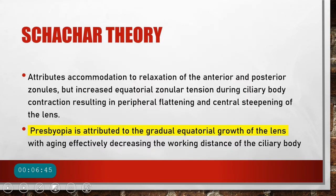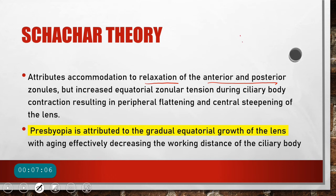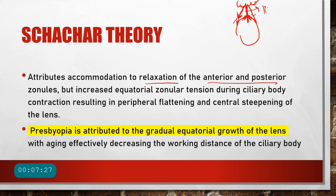The Shachar theory is totally different and opposite to the Helmholtz theory. It states that accommodation occurs due to relaxation of the anterior and posterior zonules and increased equatorial zonular tension during ciliary body contraction. In the Helmholtz theory all zonules relaxed; in Shachar's theory only the anterior and posterior zonules relax, while the equatorial zonules contract, pulling the lens toward the equator, allowing the peripheral parts of the lens to assume a spherical shape and achieve accommodation.